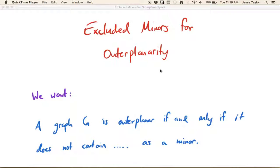As mentioned in the last video, this video is going to be about excluded minors for outer planarity. So what we're looking for is a result of this type: A graph G is outer planar if and only if it does not contain some list of graphs as a minor.